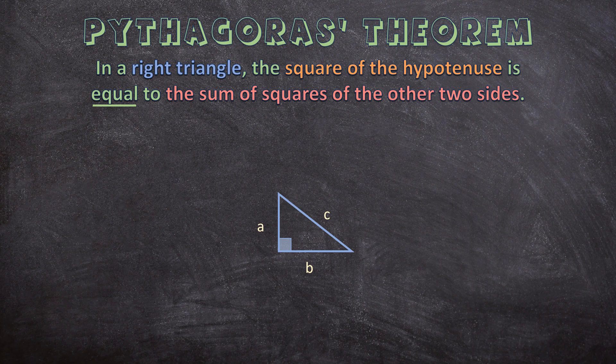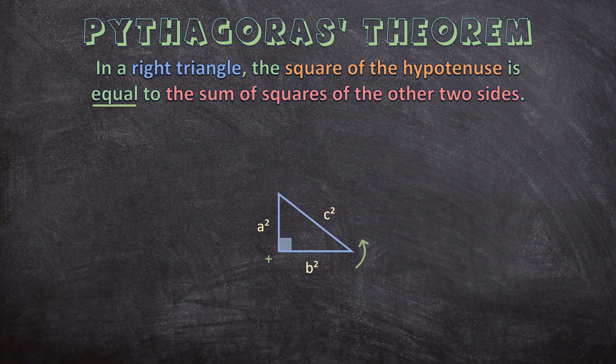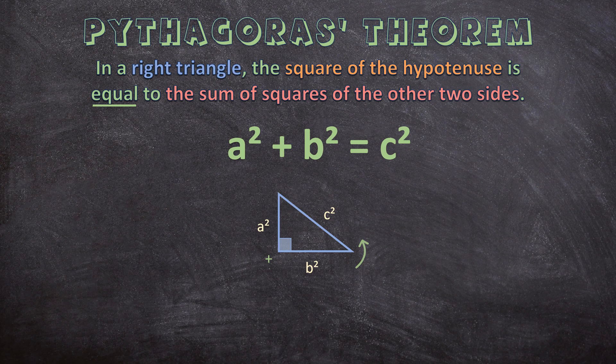And Pythagoras theorem which we just tested says that the square of this side of A plus the square of this side of B will give us the square of C. So we can write this as a formula. A square plus B square is equal to C square.